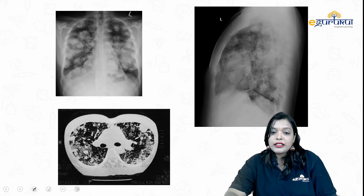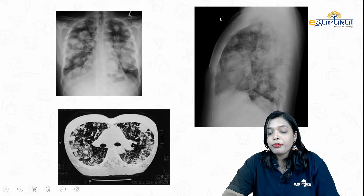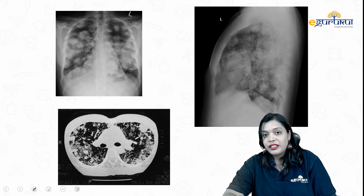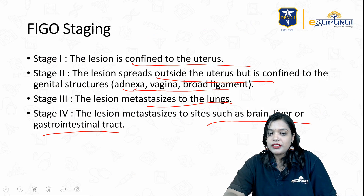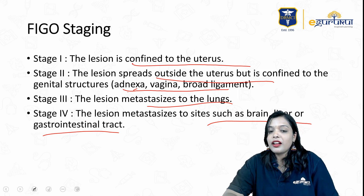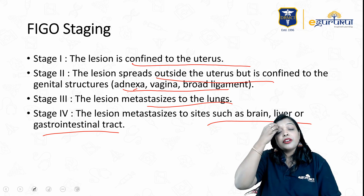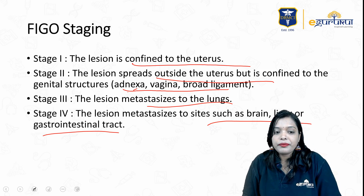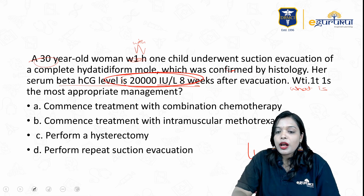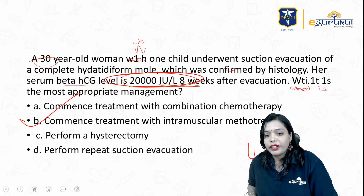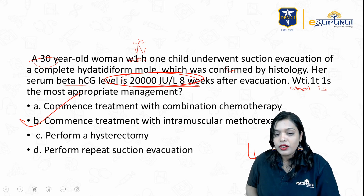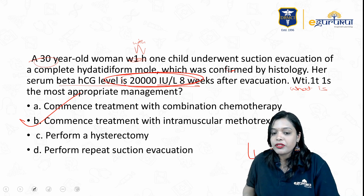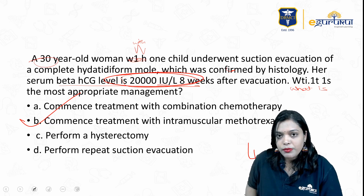The cannonball appearance on chest X-ray corresponds to Stage 3 — lung metastases. Stage 2 involves the vagina; they will present you with paraurethral nodules. So that's about our question. The score is 4, so low risk — commence treatment with intramuscular methotrexate. That's the answer to the choriocarcinoma MCQ.